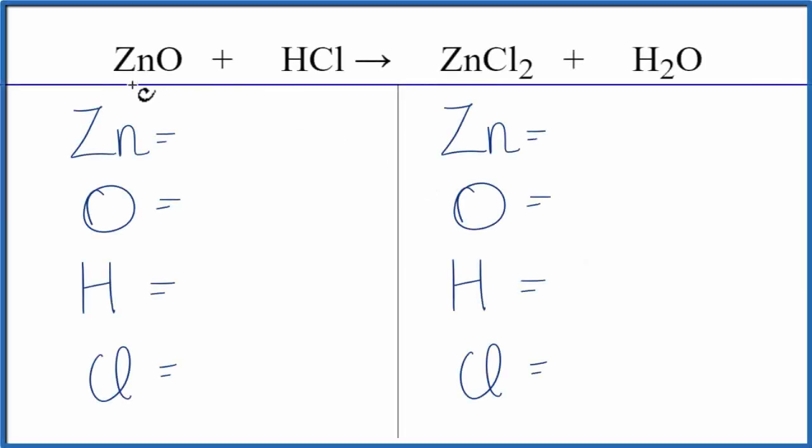In this video, we'll balance the equation for ZnO plus HCl. That's zinc oxide plus hydrochloric acid.